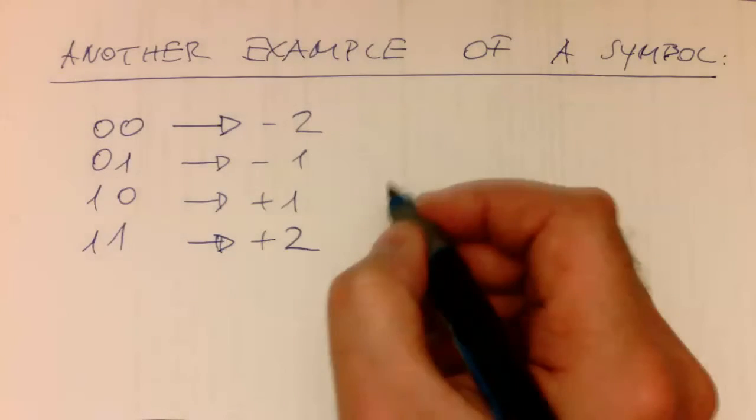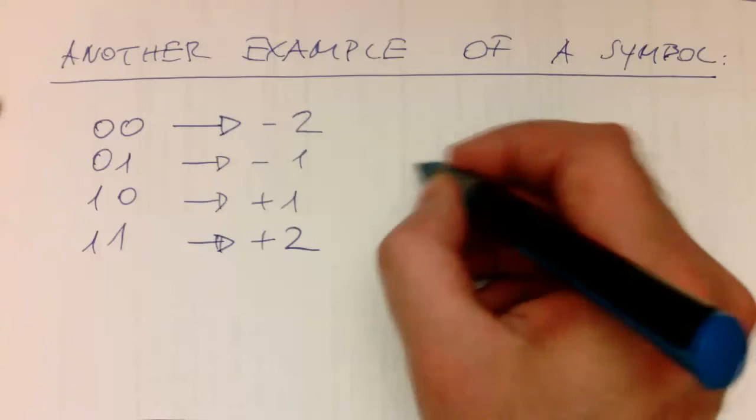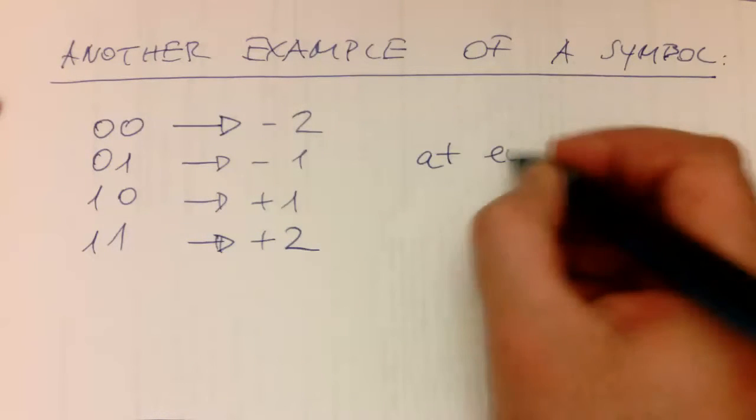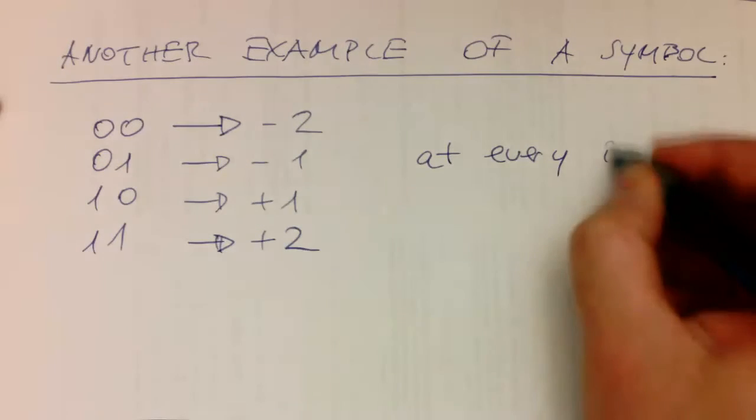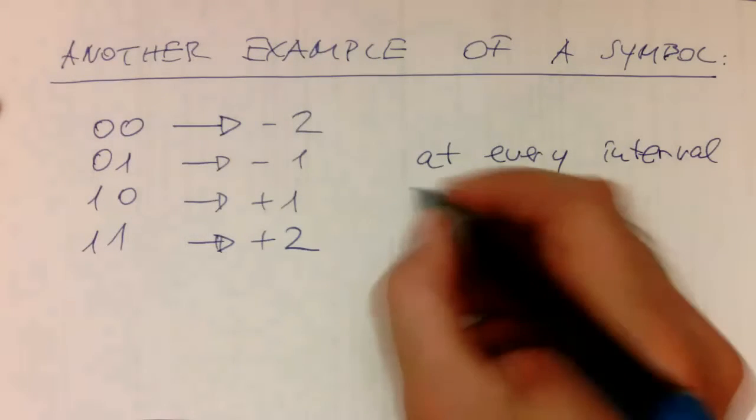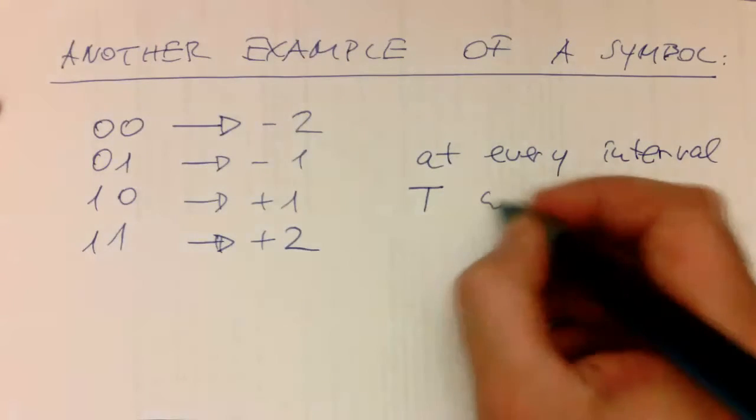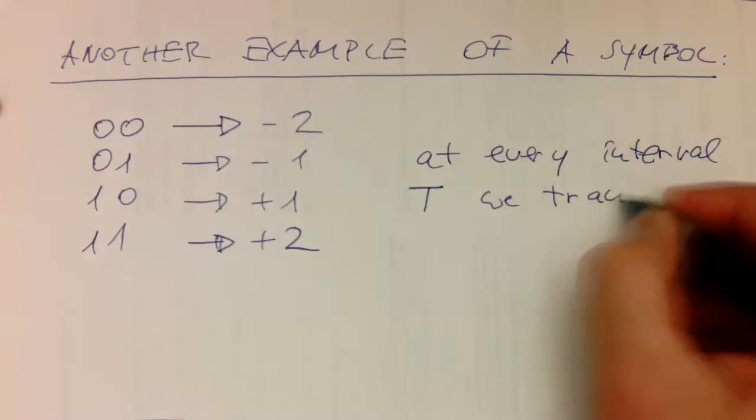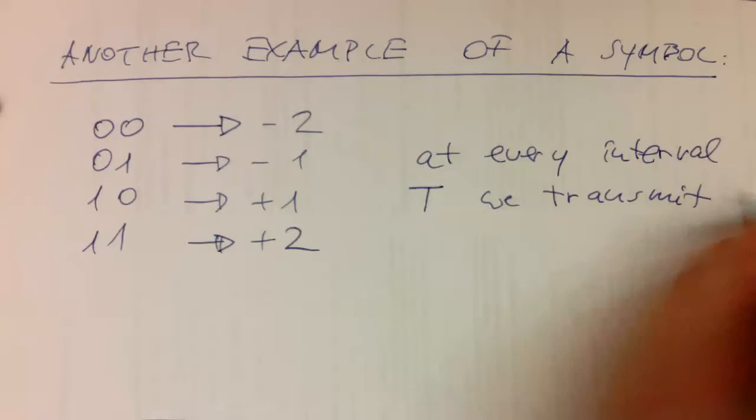In this case, at every interval T, we transmit two bits.